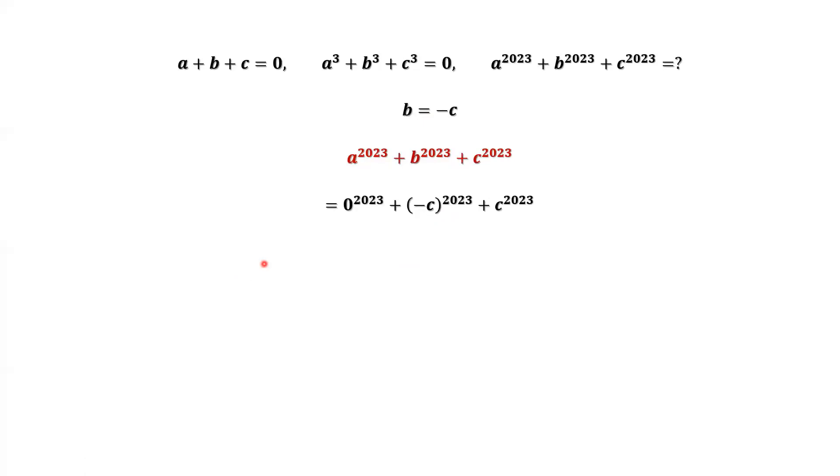Now we have the final answer. Continue to simplify. Because the power of 2023 is an odd number, we can factor negative 1 out, equals negative C to the power of 2023, then plus C to the power of 2023. The final answer is 0.